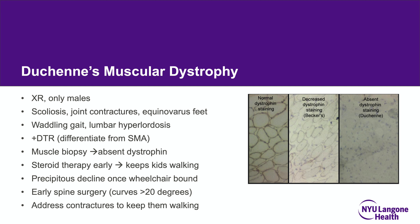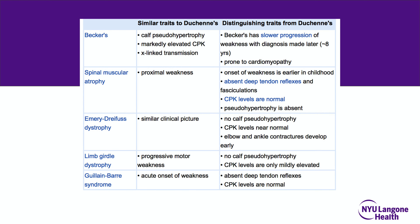Muscle biopsy shows absence of dystrophin. Steroid therapy early is key — it keeps kids walking. Once children decline in function and can no longer walk, there tends to be a precipitous decline, which is why early spine surgery is advocated as soon as the curve exceeds 20 degrees. Becker's muscular dystrophy is important to differentiate from Duchenne's: it has much slower progression, diagnosis is made around age 8-9, and patients have more cardiac issues, though they can present very similarly.